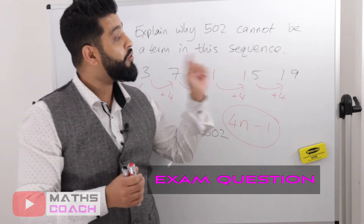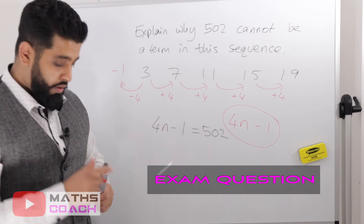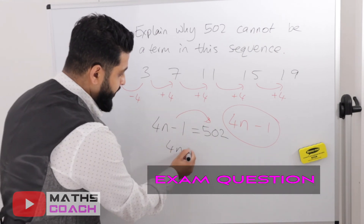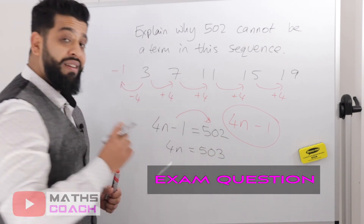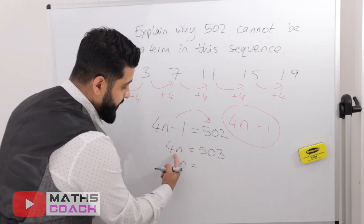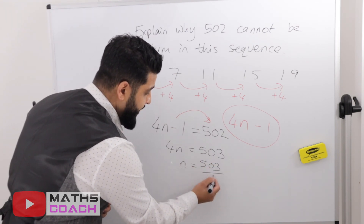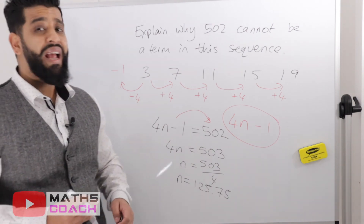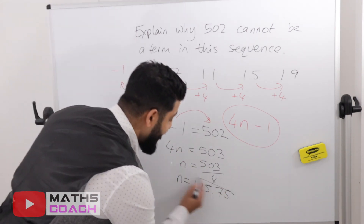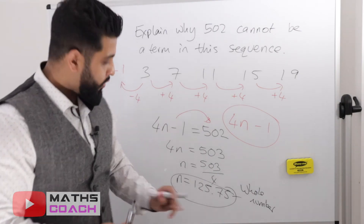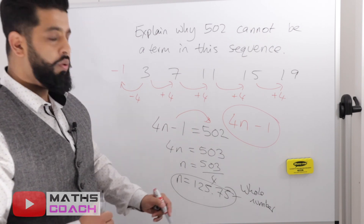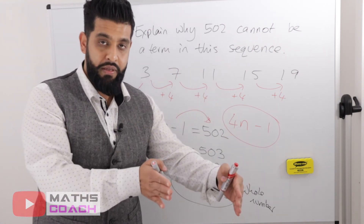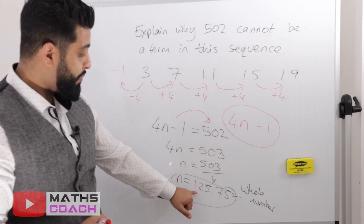We assume 502 could be a term and set 4n minus 1 equal to 502. Adding 1 to both sides gives 4n equals 503. Dividing both sides by 4 gives n equals 125.75. This is not a whole number, so 502 cannot be a term in the sequence — you can only have the 125th or 126th term. If the result had been a whole number, then 502 would be a valid term.